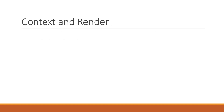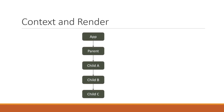First let's try to understand at a high level the render phase when we have React context in a component tree. Let's assume that our application has five components: an App component, a Parent component, and three child components — Child A, Child B, and Child C.